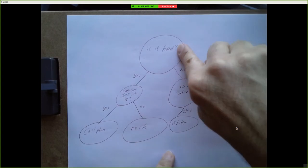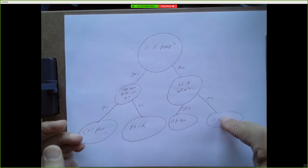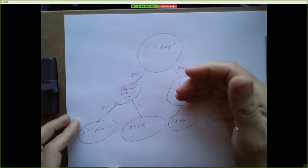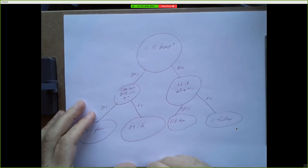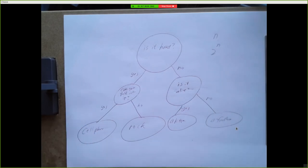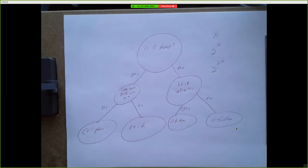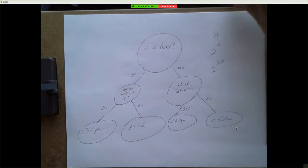With one question we can differentiate between two things. With two questions we can differentiate between four things. Each time we go down in the tree that corresponds to another question, so if you go down n levels you have 2^n leaf nodes — 2^n possible answers. With twenty questions you can differentiate 2^20 different things — that's about a million. So you can store a million different items in this database and get to exactly one of them by asking twenty questions.